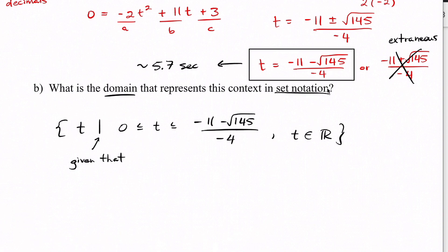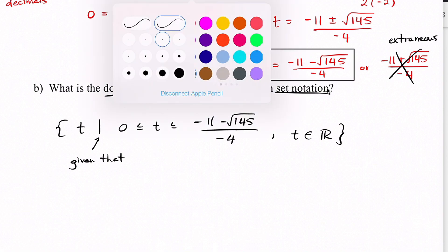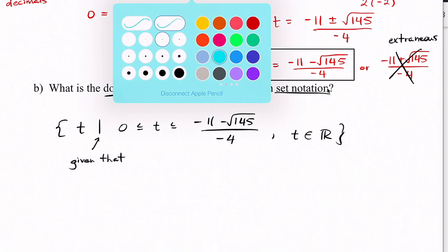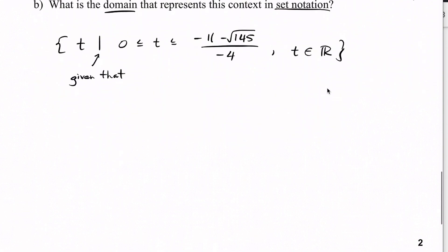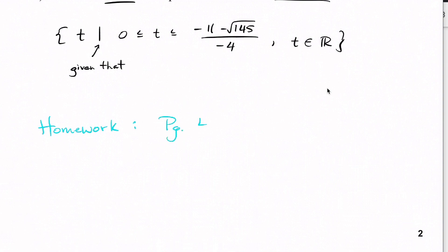For homework: page 419, numbers 4A and C, then 6 — just A and C — and then 7, 8, and 11.